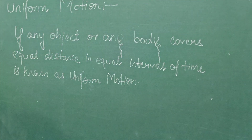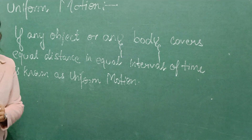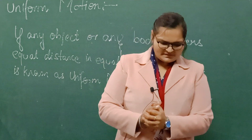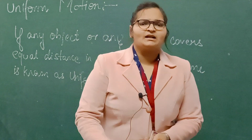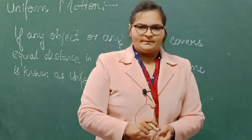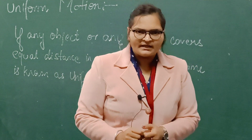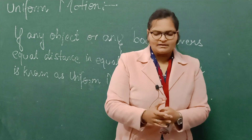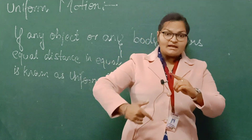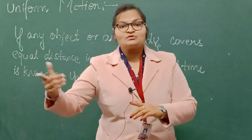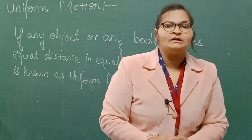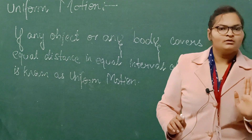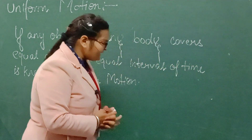Now let's talk about examples of uniform motion. Suppose you are covering 2 km in 2 seconds, and again in the next 2 seconds you are covering only 2 km — that type of motion is known as uniform motion.